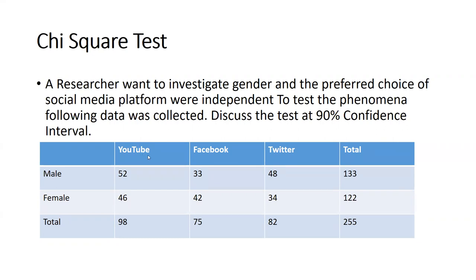How we can calculate the chi-square test is our main problem. The researcher wants to investigate whether gender and the preferred choice of social media platform are independent. To test this, following data was collected. We will discuss the test at 90% confidence interval. The researcher wants to check whether there is any relationship between gender and preference of the social media platform, or whether both these things are independent.